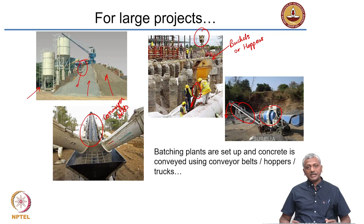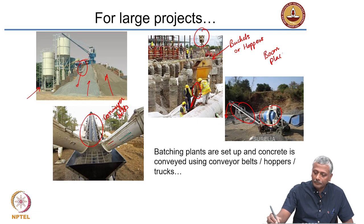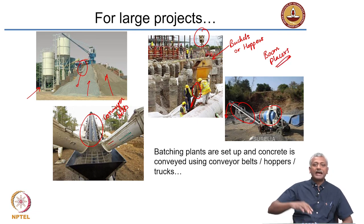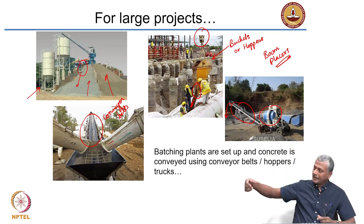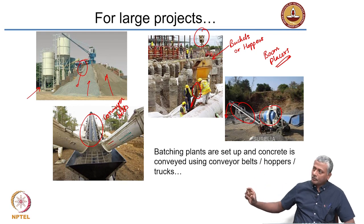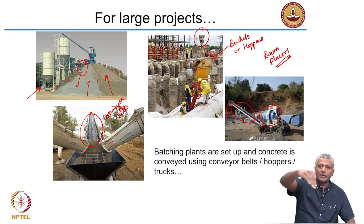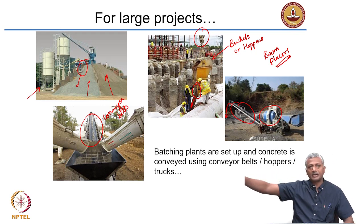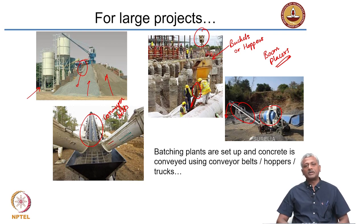Another common method seen in most construction sites today is the use of boom placers. A boom placer has an extended arm connected to a pipe, and you discharge the concrete into a pump at one end. The boom placer carries the concrete across that pipe and is able to access very large areas. It is a major piece of equipment used wherever large quantities of concrete need to be placed.